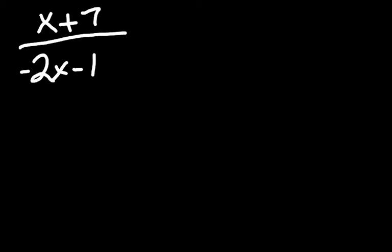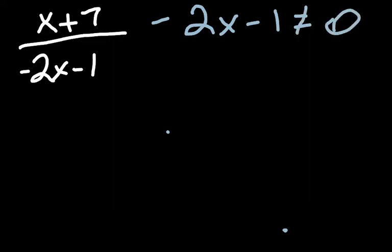Okay, so moving over from our previous page, this is our rational expression, x plus 7 over negative 2x minus 1. And that is simplified, but if you remember, the denominator, the bottom part, cannot equal 0. So we're going to do a two-step equation to be able to figure out what's going on here.